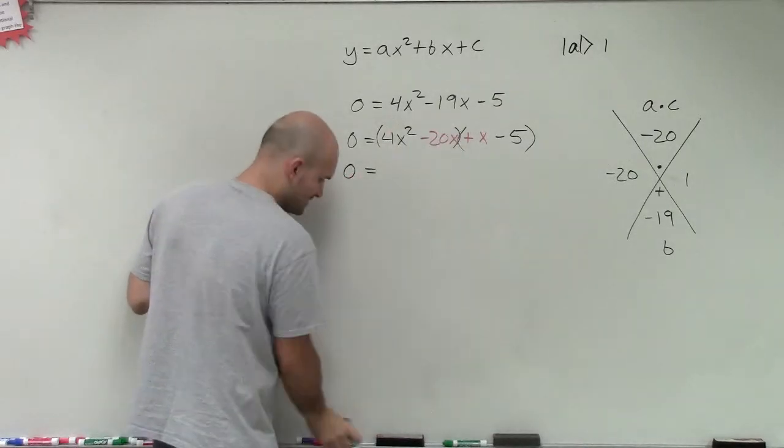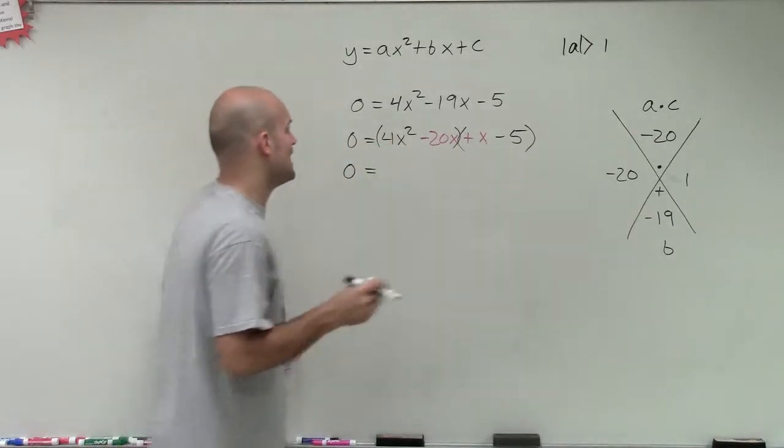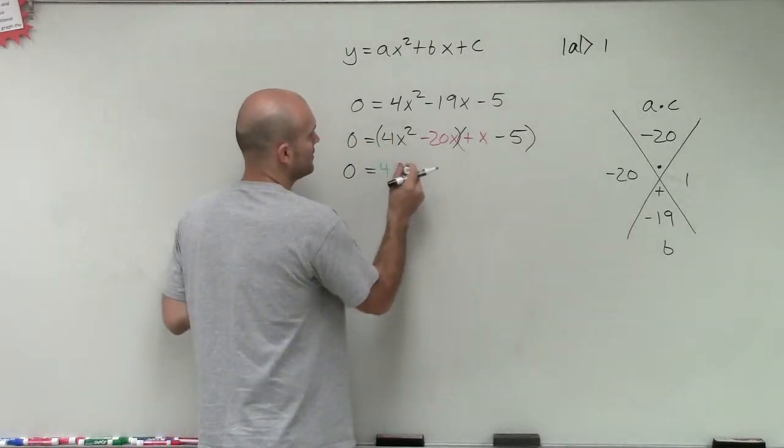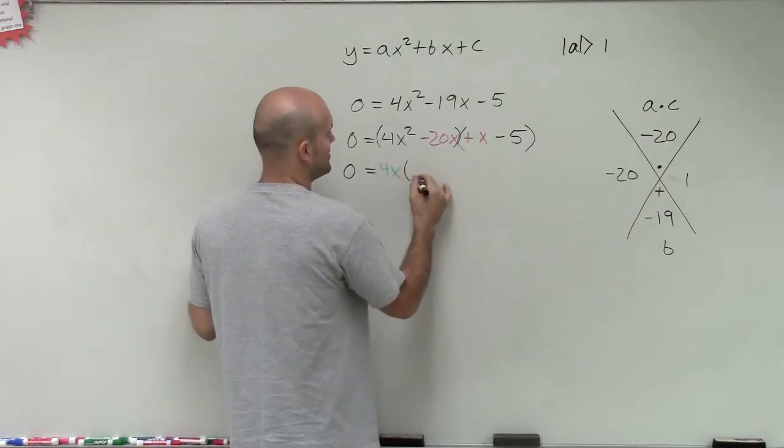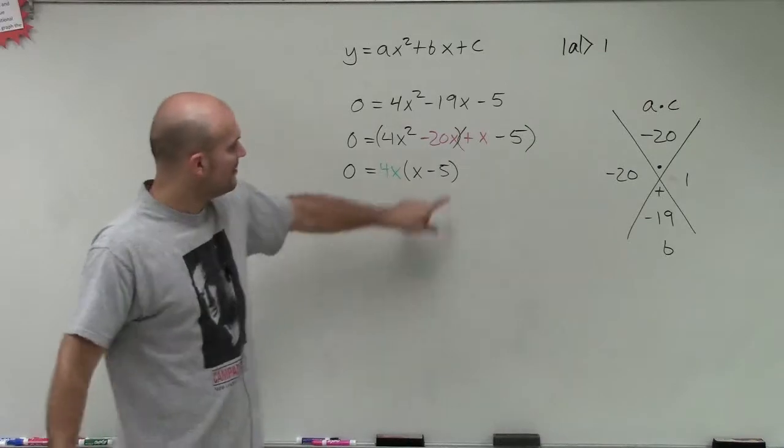I look at what's the GCF out of this term. I'll use a green marker. You can say, well, I can factor out a 4 and an x. So I'll factor out 4x, and that's going to leave me with x minus 5.